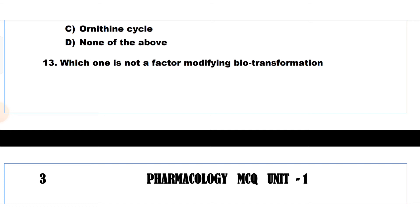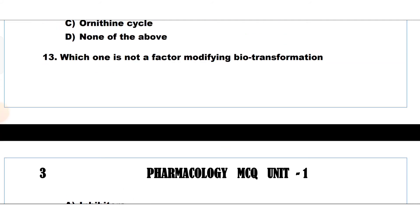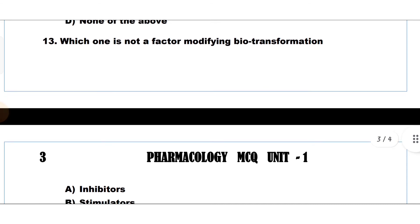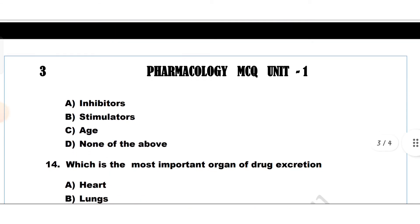Question number 13. Which one is not a factor modifying biotransformation? Options: inhibitors, stimulators, age, or none of the above. This is a direct question. The answer is Option D, none of the above — meaning inhibitors, stimulators, and age are all factors modifying biotransformation.